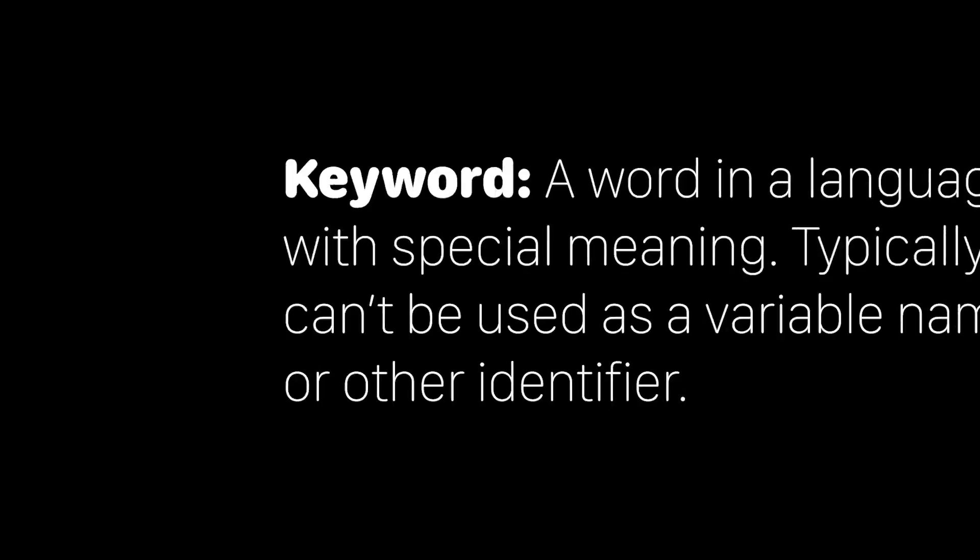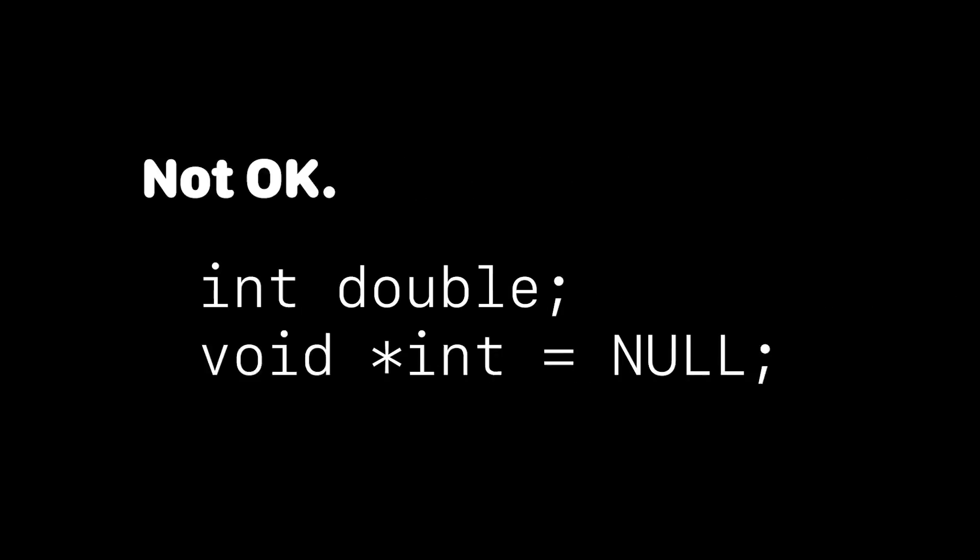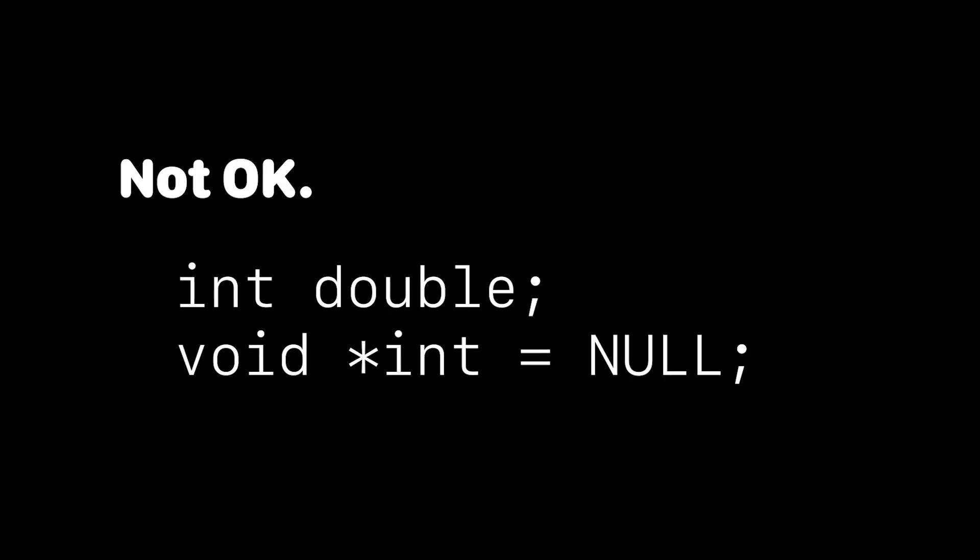For those of you who are brand new to this and wondering what a keyword is: a keyword is simply a special word in the language that means something. Basically, you can't go around in C naming your variables int or double — that sort of thing would definitely not go over well, because there are special reserved keywords in the language.